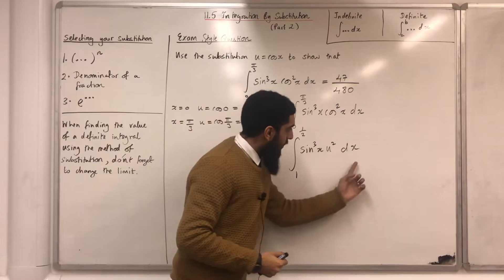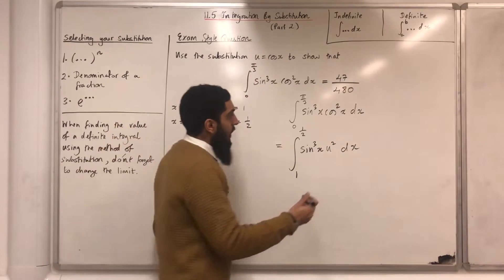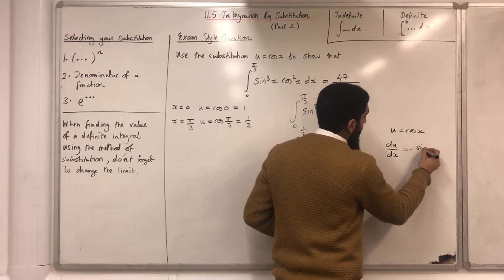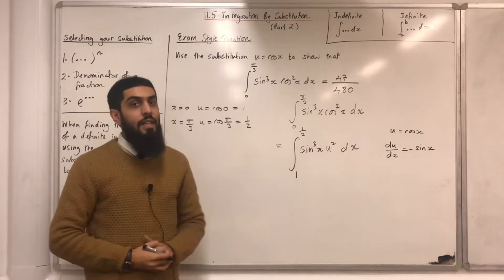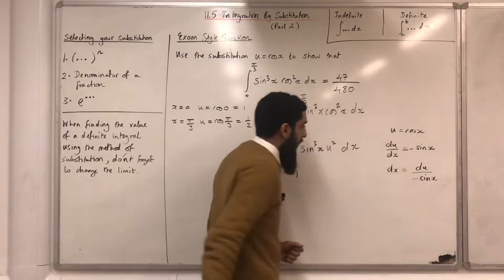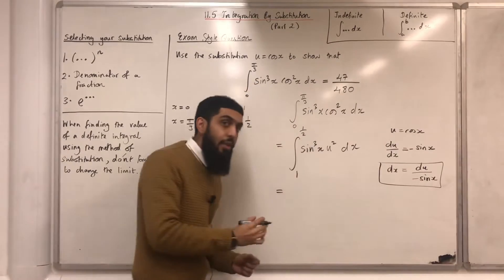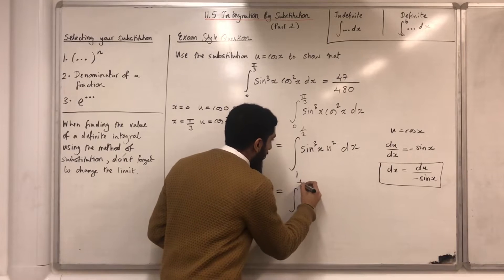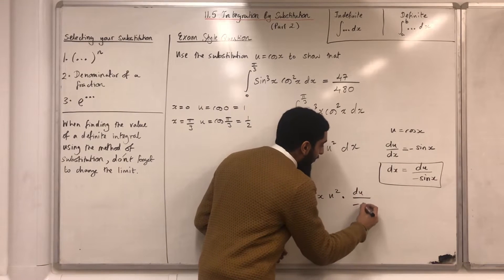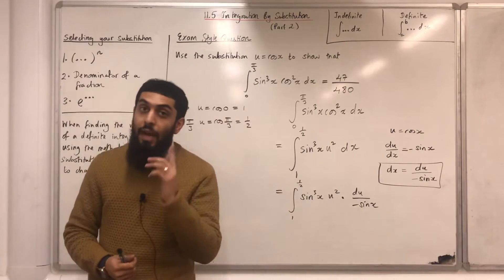Now I've got dx and I need to get rid of that and put in a du. So my next step is to differentiate u with respect to x. If u = cos x, then du/dx = −sin x. Making dx the subject gives dx = du/(−sin x). This particular integral then reduces to the integral from 1 to a half of sin³x · u² · du/(−sin x). I see some cancellation: sin³x divided by −sin x is −sin²x.